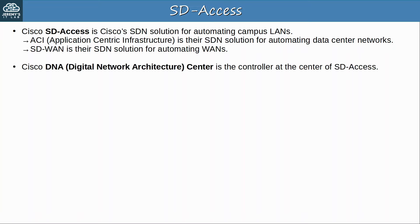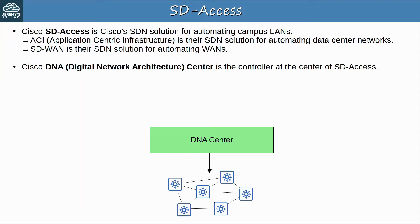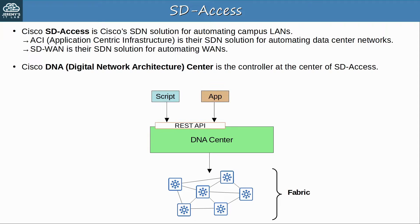Cisco DNA — Digital Network Architecture — Center is the controller at the center of SD Access. In the previous video about REST APIs, we sent a REST API call to DNA Center. At the center, in the control layer, we have DNA Center. Under it we have the network devices in our campus LAN in the infrastructure layer. These devices form the fabric of SD Access. In the application layer we have our scripts and apps that interact with DNA Center — these could be tools we develop, third-party tools, or tools directly from Cisco. DNA Center itself also has a GUI that we can use to control it.